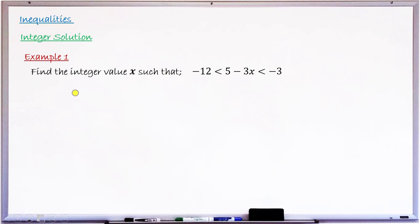To begin the lesson, let's go straight to the very first example, because finding integer solutions is just an extension of our previous lesson where we learned how to find the solution of a compound inequality. Example number one says: find the integer values of x such that minus 2 is less than 5 minus 3x, and 5 minus 3x is less than minus 3.